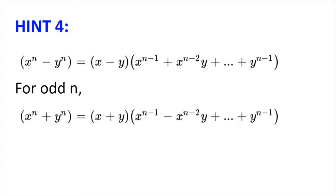Hint number 4: We know that x to the power of n minus y to the power of n equals x minus y multiplied by x to the power of n minus 1 plus x to the power of n minus 2 multiplied by y, all the way to plus y to the power of n minus 1. We can replace y with minus y to get the sum formula. How will this be useful for the problem? What is the sum x plus y if we relate it to the problem?